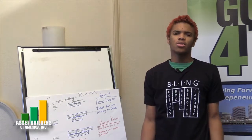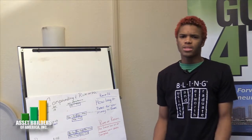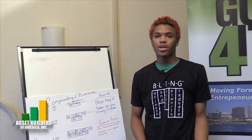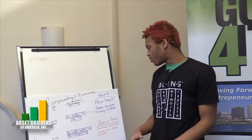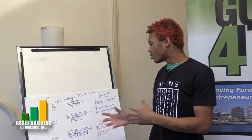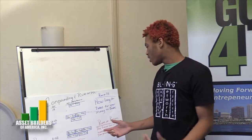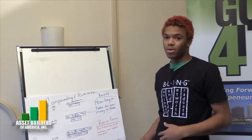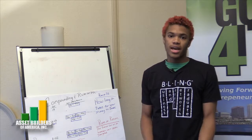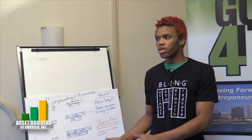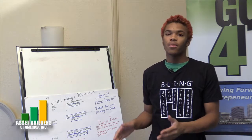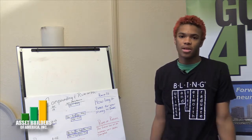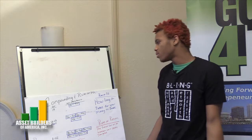The rule of 72 is how long it will take for your money to double, which is very important when you want to find out how much you will get — especially if you're talking about the rate of return, because that affects the rule of 72, which will affect how long it will take for your money to actually double.